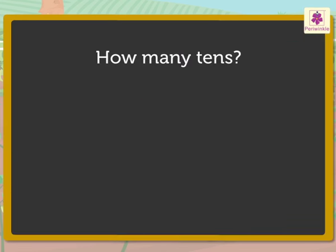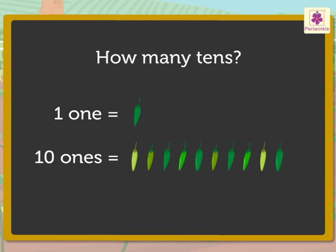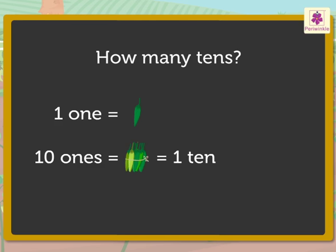We know that one one means one chilli. Hence, ten ones mean ten chillies. So, when we group ten chillies together, we get one ten chillies.